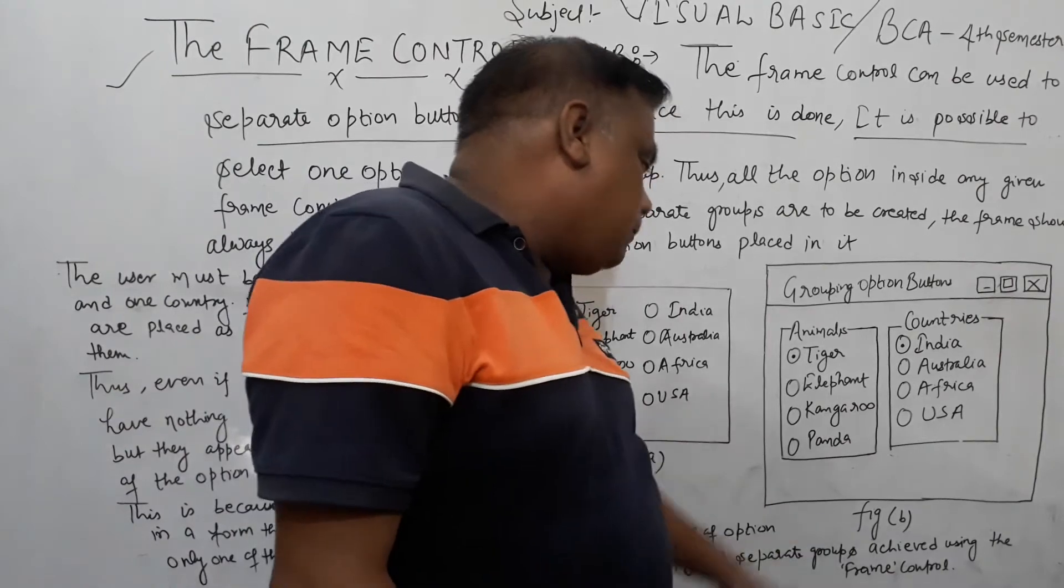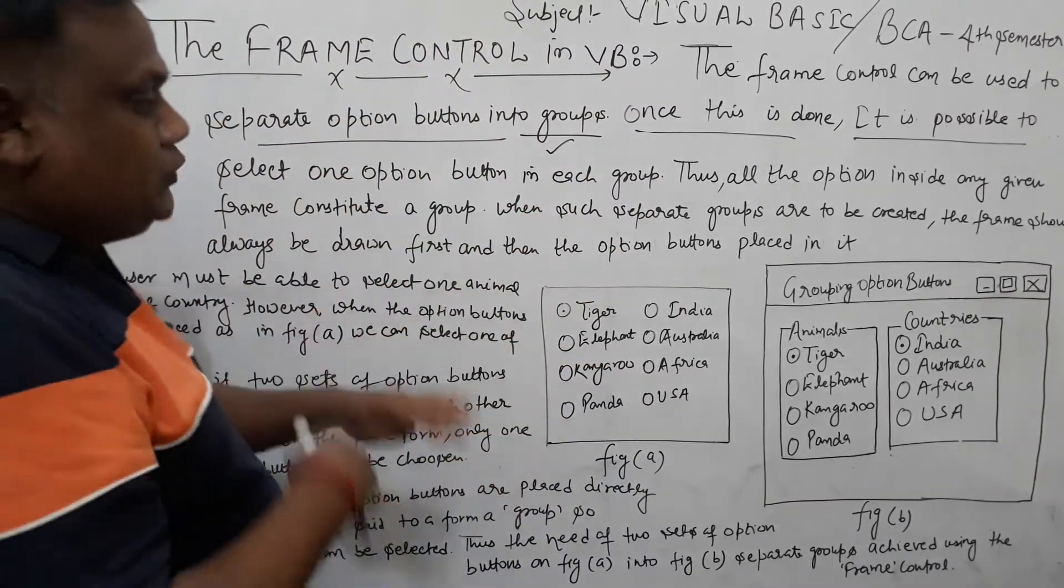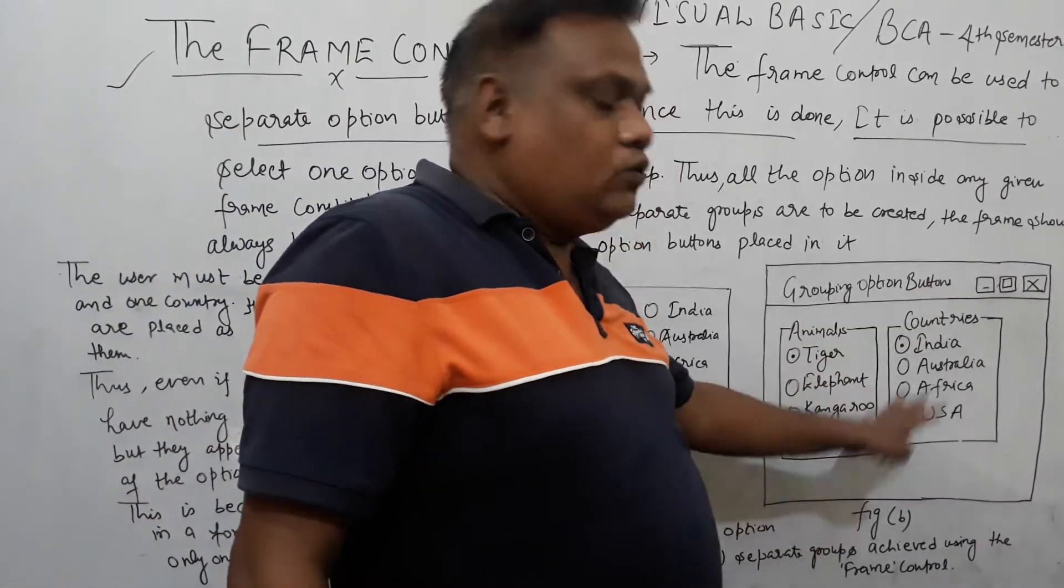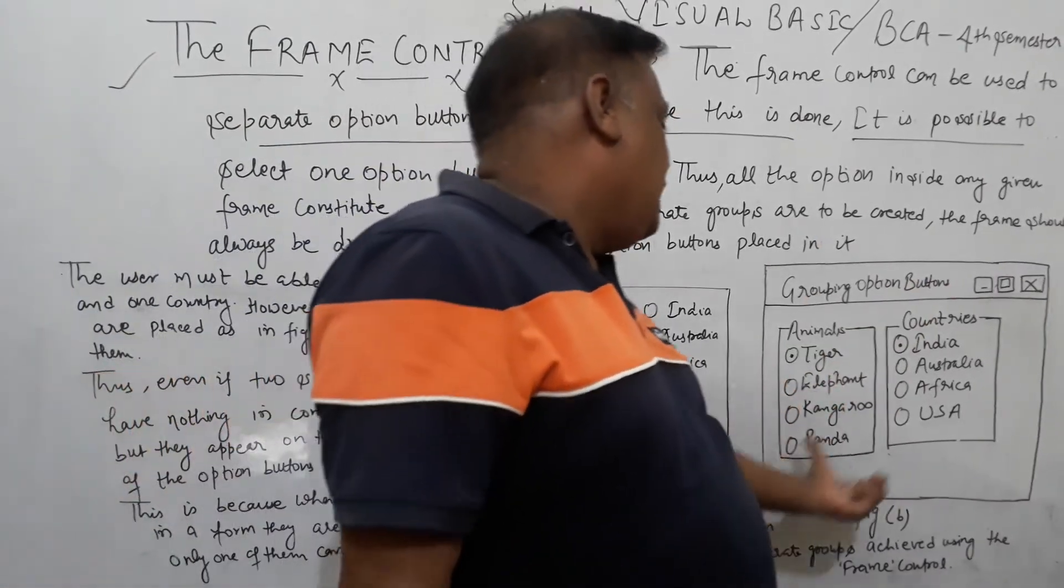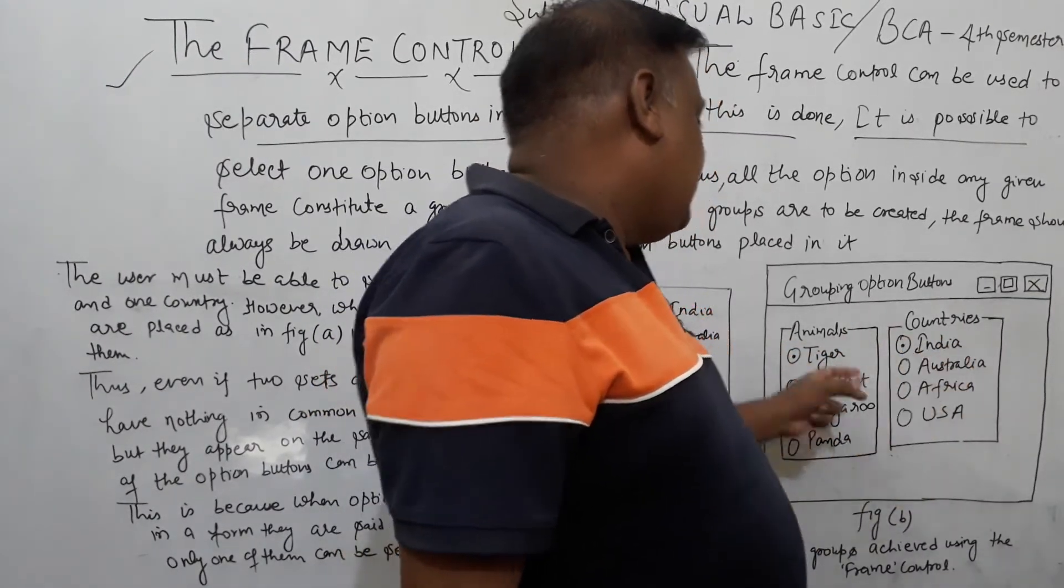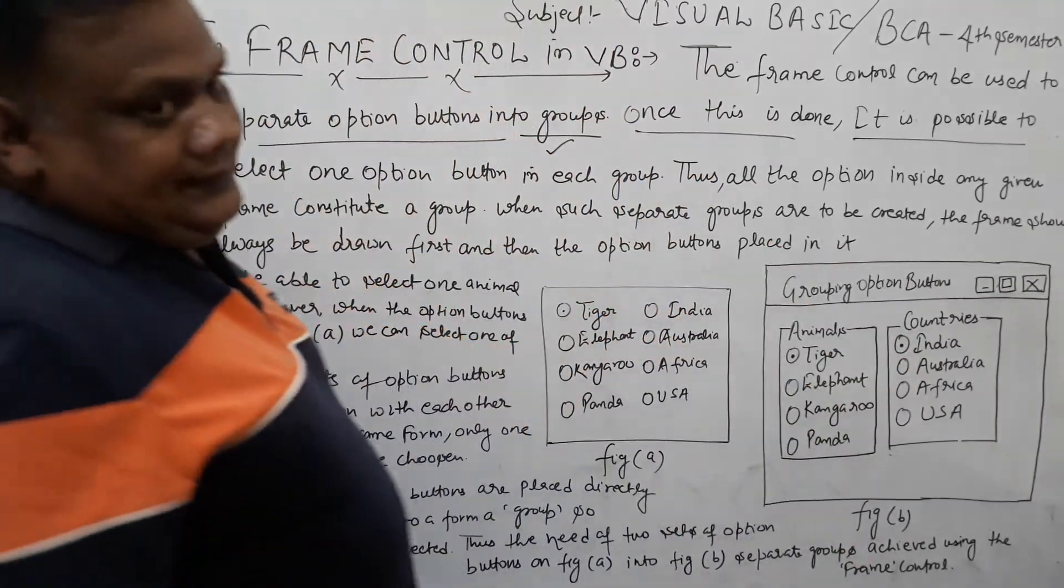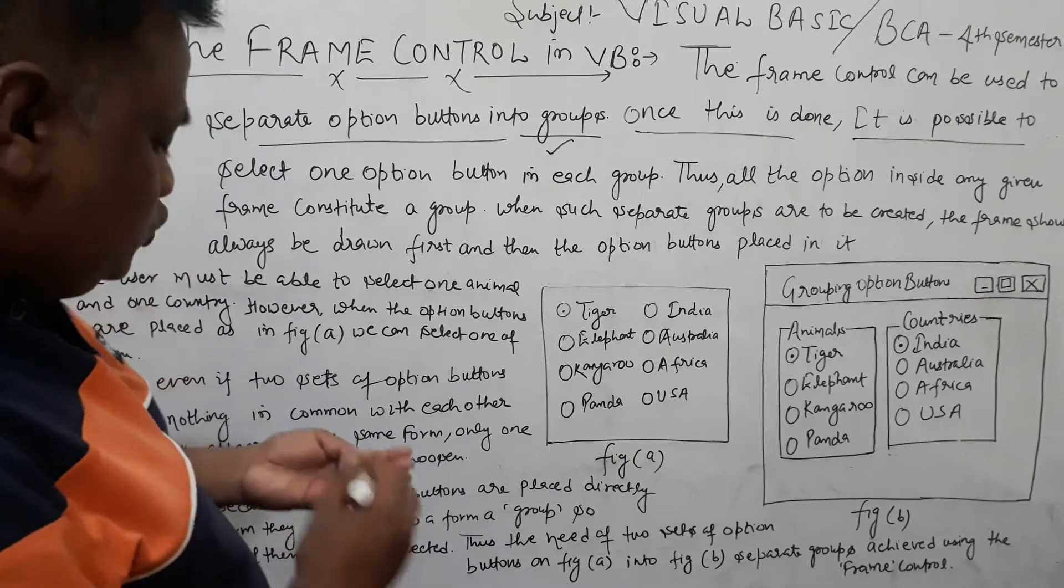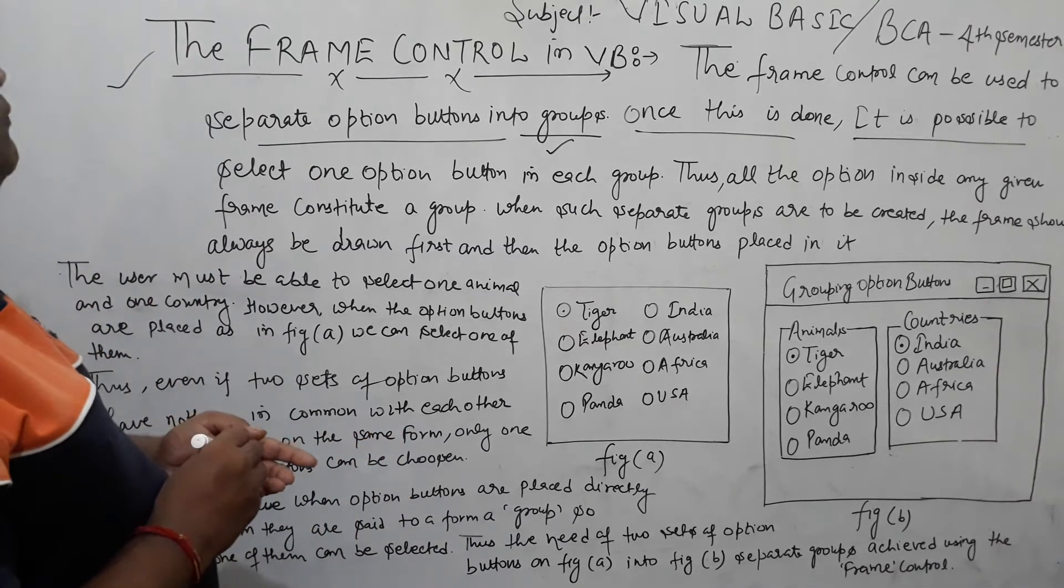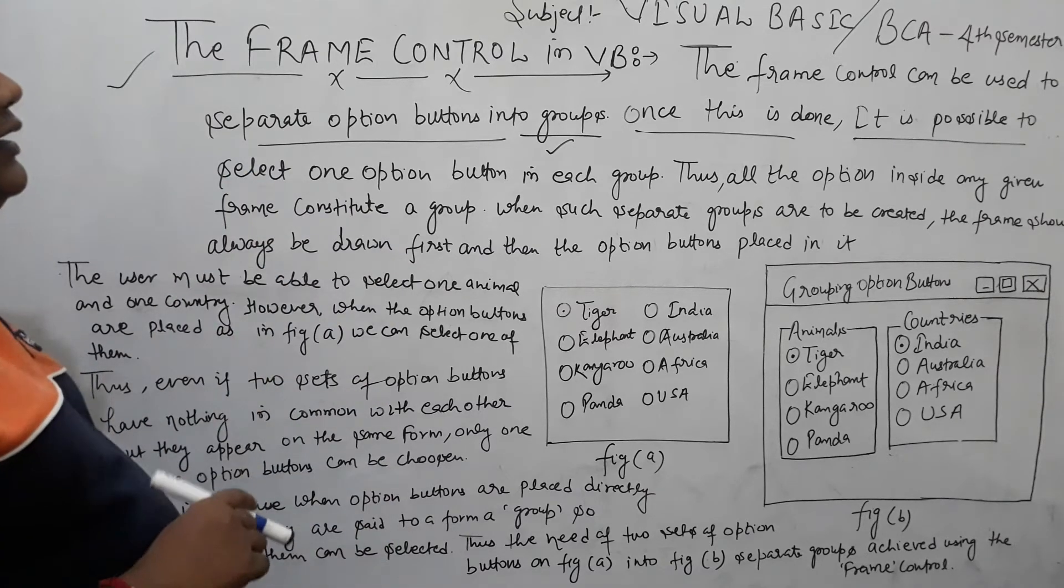Separate groups achieved by using frame control. If we want to change, then we use frame control. We use frame 1 and frame 2. We have captured the caption, so we can select one of them. So we have a very important topic: the frame control in Visual Basic. Frame control allows us to change the caption, so we have two sets of options.